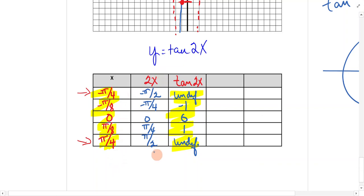Then we have 2x. Multiply this by 2: you get negative pi over 2, negative pi over 4, 0, pi over 4, and pi over 2. Now tangent is undefined at negative pi over 2 and pi over 2. For negative pi over 4, tan is negative 1. Tan at 0 is 0. At pi over 4, it's 1.